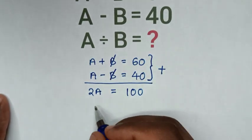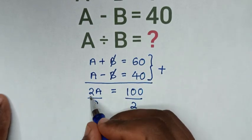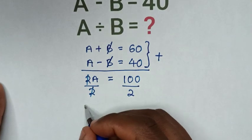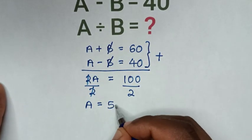To find the value of A, we divide both sides by 2. A equals 100 divided by 2, which is 50.